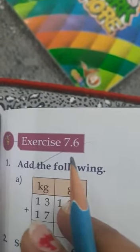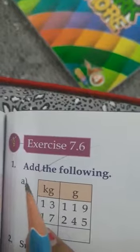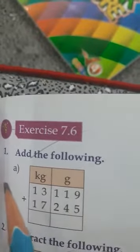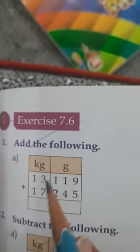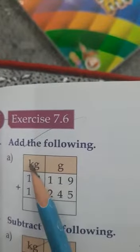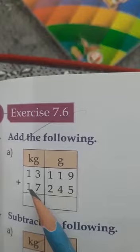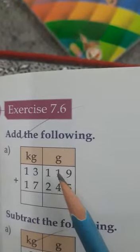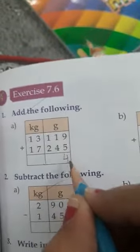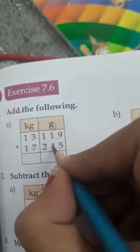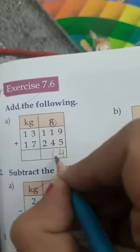Good morning students. Today I'm explaining Exercise 7.6. First part heading: Add the following. See there, first sum upside. There's kilogram and gram - kilogram statement given on kilogram side and gram statement given on gram side. So now do the addition: 9 plus 5 equals 14, write 4 and carry 1. 1 plus 4 equals 5, plus 1 carry equals 6.